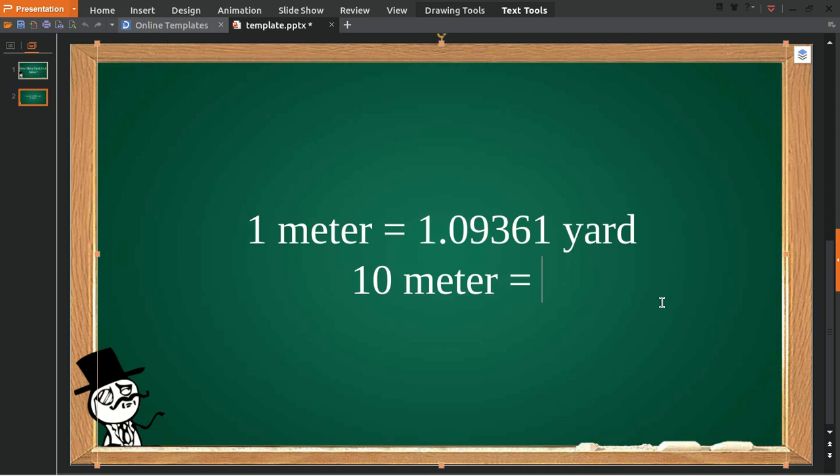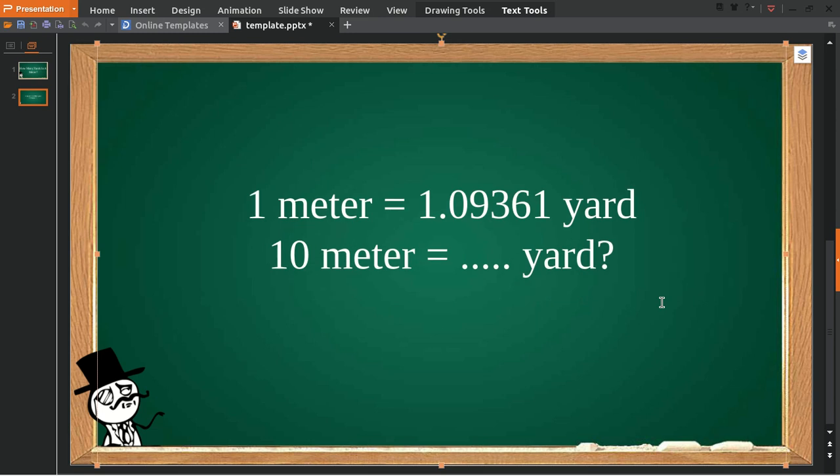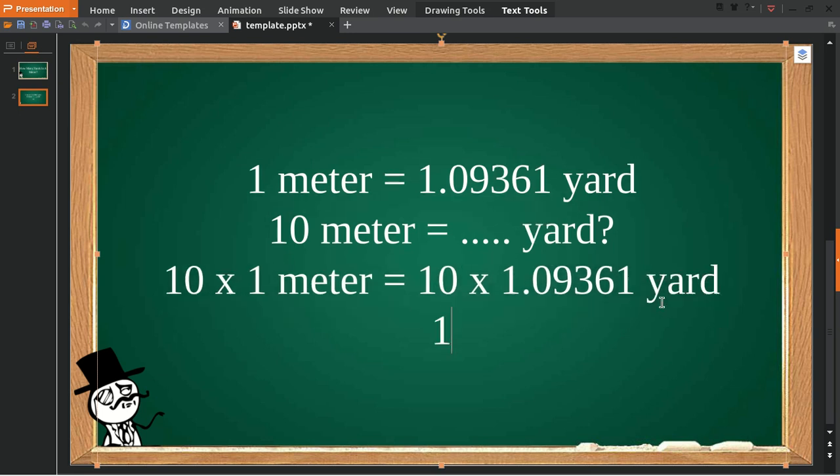The first step we need to make is we multiply 10 with 1 meter, and then give it an equal sign. And then you multiply again 10 with 1.09361 yards.